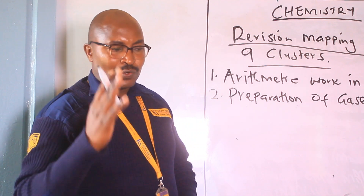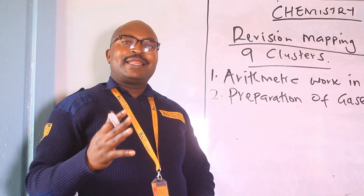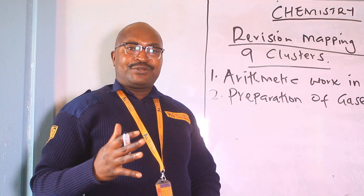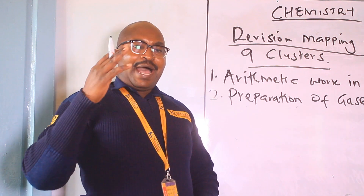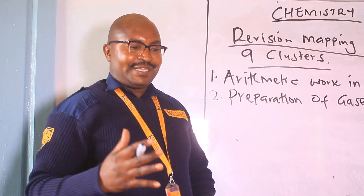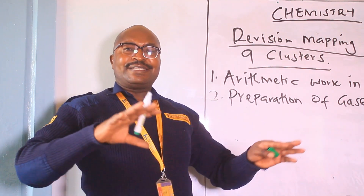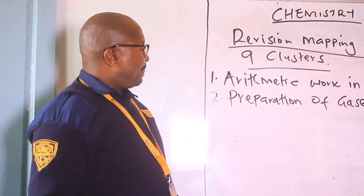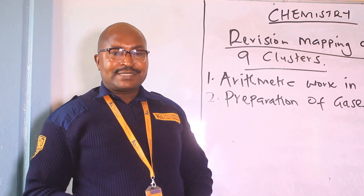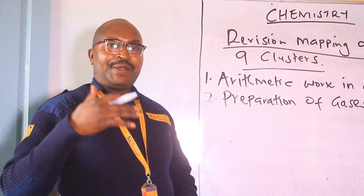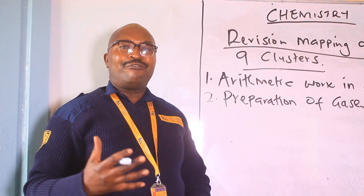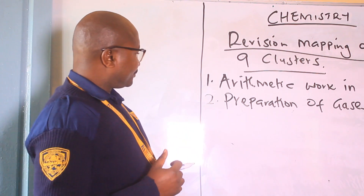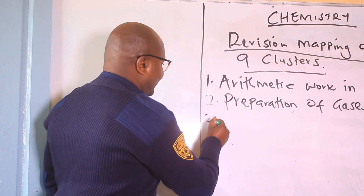When you go to the topic of sulfur and its compounds, that is preparation of sulfur dioxide, preparation of sulfur trioxide gas, and preparation of hydrogen sulfide gas. Then chlorine and its compounds — there you will prepare 2 gases: preparation of hydrogen chloride gas and preparation of chlorine gas. Those are the 17 gases. However, in the preparation of gases I am also going to include the preparation of nitric acid.